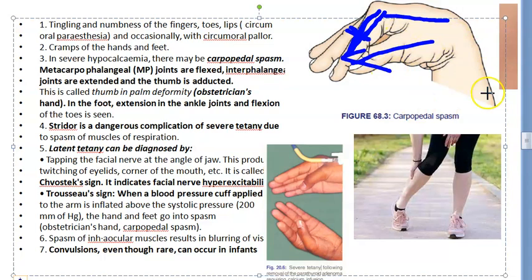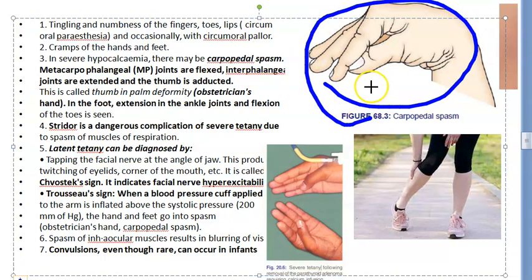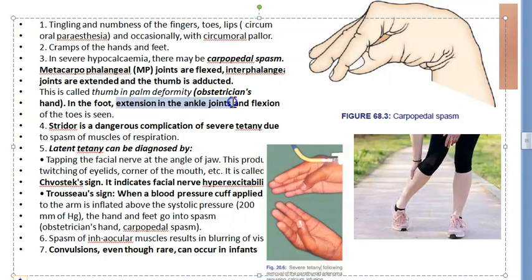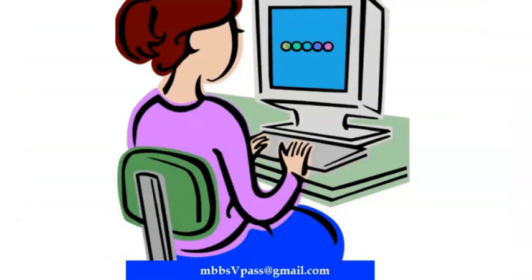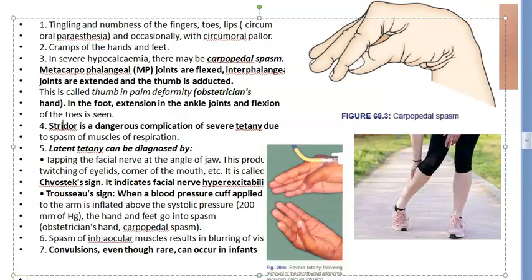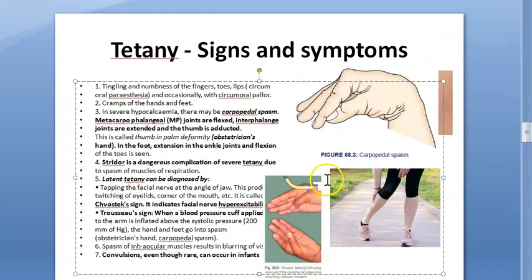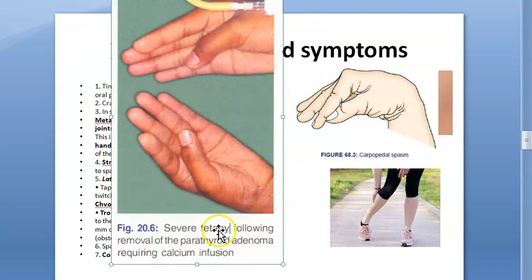In the foot, you will see extension at the ankle joint and flexion of the toes — plantar flexion. This is carpopedal spasm of the foot. Looking at an image of severe tetany following removal of a parathyroid adenoma, you can see the thumb adducted, MP joints flexed, and interphalangeal joints extended.